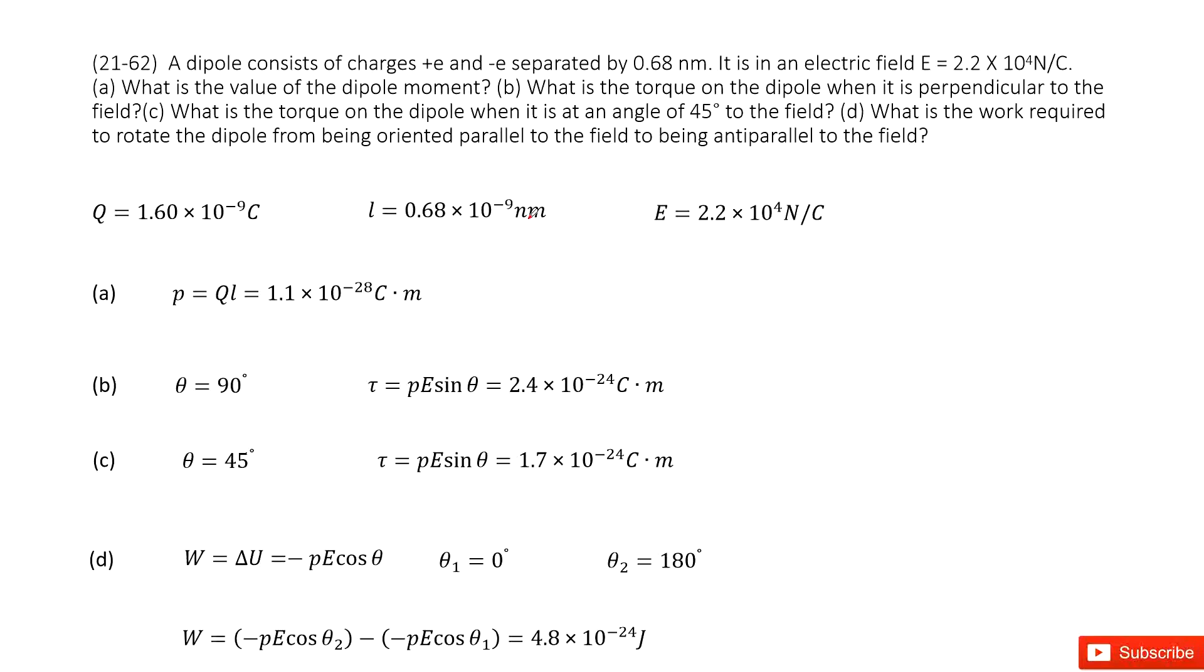Chapter 21 is about electric charge and electric field. So you can see we have a dipole, and this dipole just includes two point charges. One is positive e, and the other one is negative e. So these two charges, one is positive, one is negative,